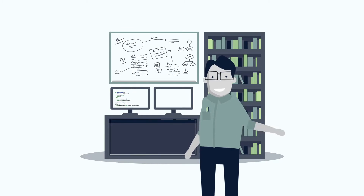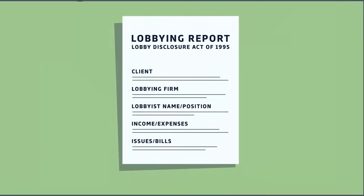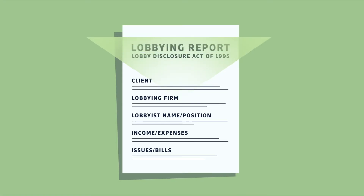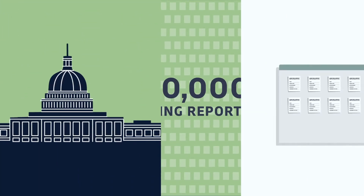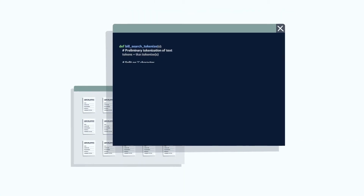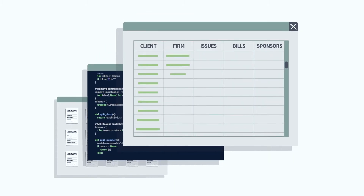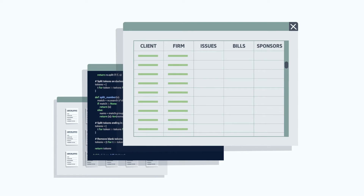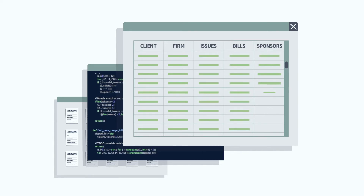Professor In-Song Kim at MIT developed LobbyView. This comprehensive database utilizes advanced data science techniques to parse more than one million lobbying reports filed in the U.S., and it continues to automatically pull new filings as they become available. LobbyView uses a sophisticated algorithm to identify all political actors reported in each instance of lobbying, specific issues of interest, and lobbied legislative bills.